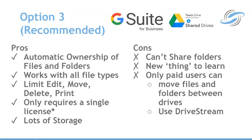It works for any type of file. You can limit the ability to edit, move, delete, or print. And really importantly, it only requires a single license. So you, as the business owner, set up a G Suite for Business account, get a shared drives license, and then you can create as many shared drives as you want and add as many free users as you want to those accounts. It also gives you loads of storage — at minimum you get one terabyte, and once you've got five licenses you actually get unlimited storage. The equivalent of going for Dropbox for Business with three licenses, you could have five G Suite Business licenses with unlimited storage.